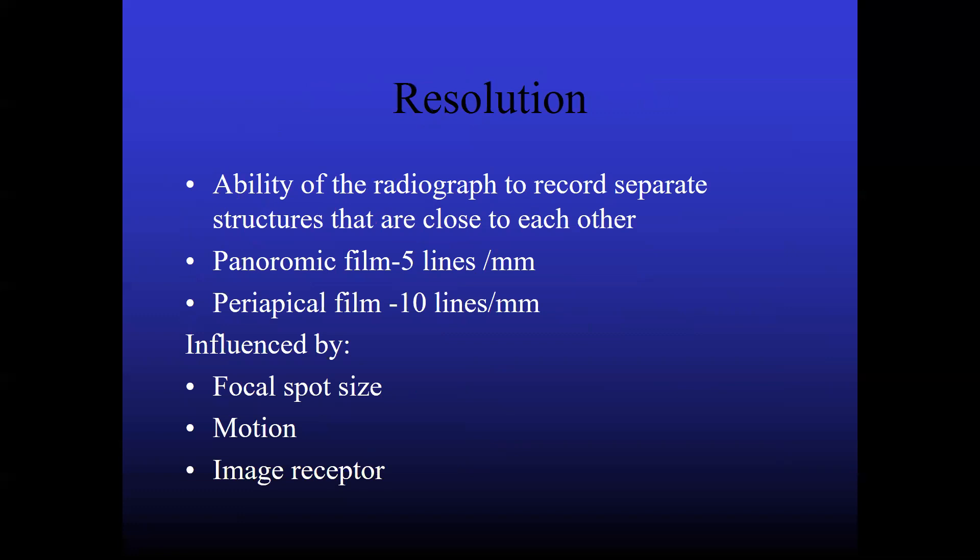So what is resolution? Ability of the radiograph to record separate structures that are close to each other. In a panoramic film, five lines per mm. In a periapical film, it is ten lines per mm. So resolution is, like when you take a photo, if you zoom it, if you can distinguish the, when you go closer and closer, and still if you are able to distinguish the finer things in the photo, you can say that that photo has high resolution. Because even if you zoom the image, you can be able to differentiate all the structures in that photo. But if the resolution is not good, if you go for a slight zoom itself, the image will look blurred actually.